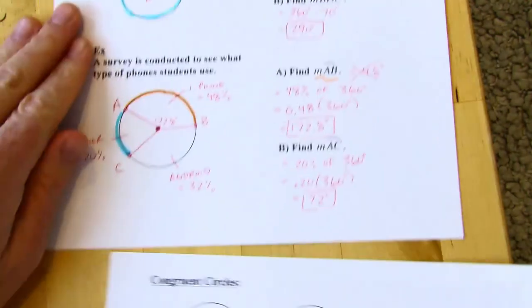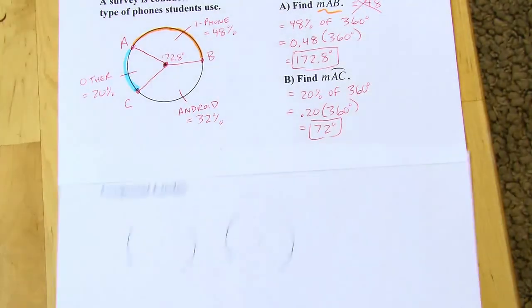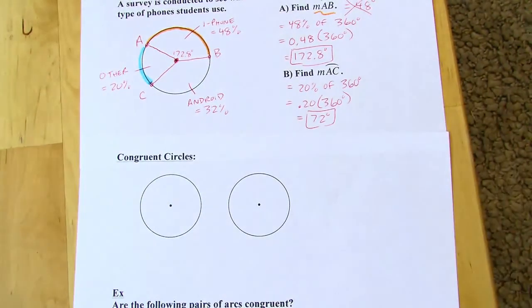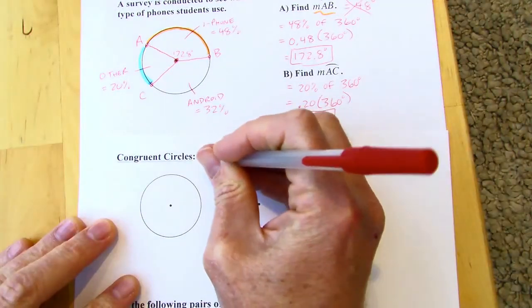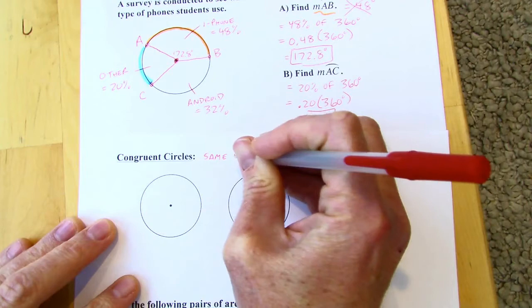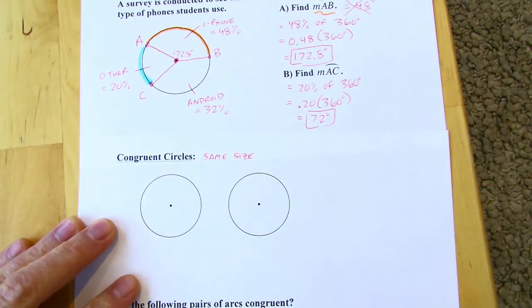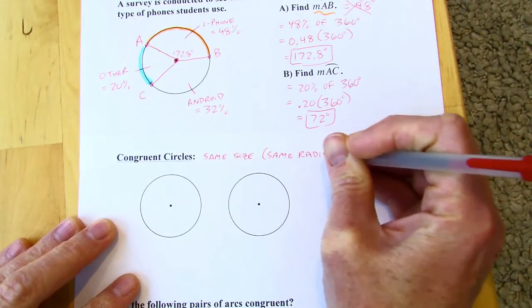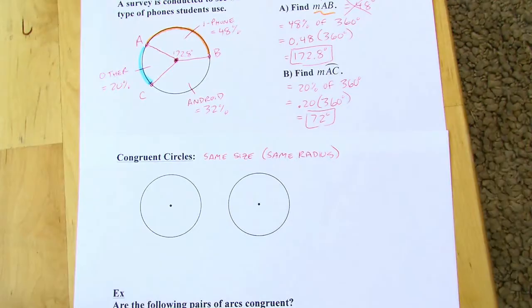Next up, we've got congruent circles. So we've had all sorts of congruent figures over the course of the year. And circles can be congruent as well. So congruent means that they're going to have the same, they're going to be the same size and same shape. Well, all circles are the same shape. So really, it just means congruent circles are going to be the same size. And the most common way to tell the size of the circle is with the radius. So if they have the same radius, then they're going to be the same size. And then they're congruent. If they had the same diameter, that would work too. Or circumference, any of those. Or area, for that matter. But usually, it's marked with the radius.